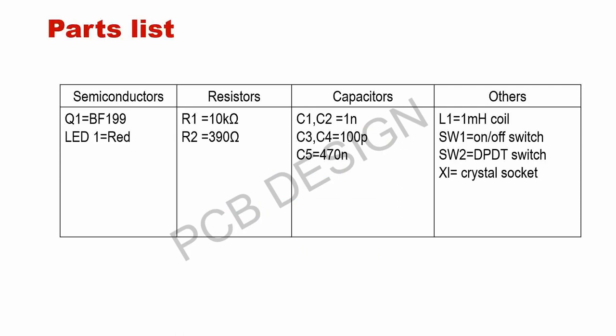In the parts list, two semiconductors are used: one BC199 NPN transistor and one red LED as an indicator. Two resistors and very few ceramic capacitors are used. One milli-henry coil is used in this circuit. Two switches — one ordinary on-off switch and one DPDT switch — are used.